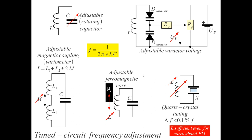Once ferromagnetic materials became available at high frequencies — ferrite materials or iron powder — we can adjust the frequency of a tuned circuit by shifting a ferromagnetic core inside the coil. This is called a PTO, permeability tuned oscillator, when built inside an oscillator. Ferrite cores are frequency-limited to around 100 MHz; beyond that they become expensive with limited adjustment range. This is a practical solution for adjusting inductivity and thus the frequency of the tuned circuit.